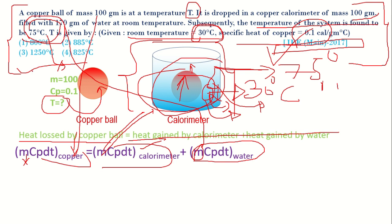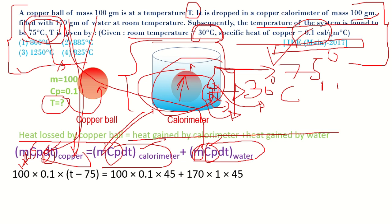The Cp specific heat of copper is given and specific heat of water we know that is 1, and temperature differences also we have to substitute. Mass of copper is 100 and Cp is 0.1 and temperature difference is T minus 75. Mass of calorimeter is 100 and Cp is 0.1 and temperature difference is 45, that is 75 minus 30.